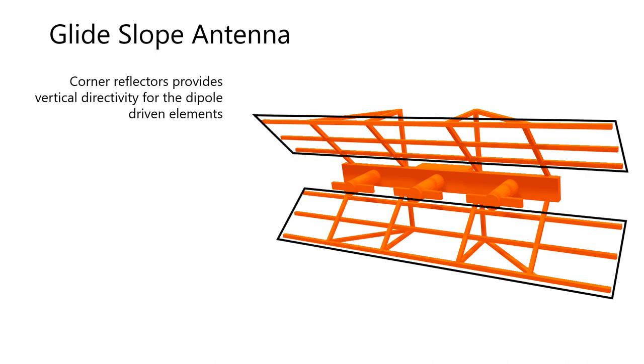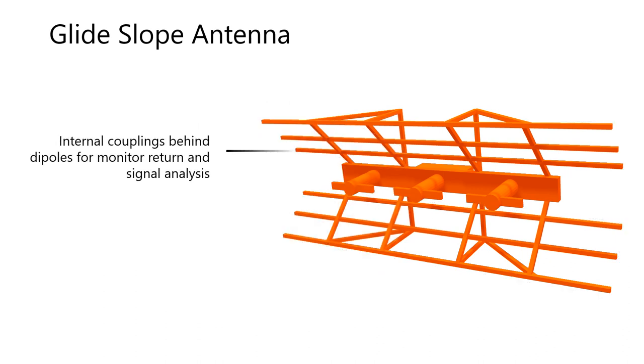Next, the glide slope antenna uses corner reflectors to provide the vertical directivity for the dipole driven elements. Lastly, RF couplings are located internally near the base of the antenna to pick up a sample of the radiated energy for monitoring purposes.